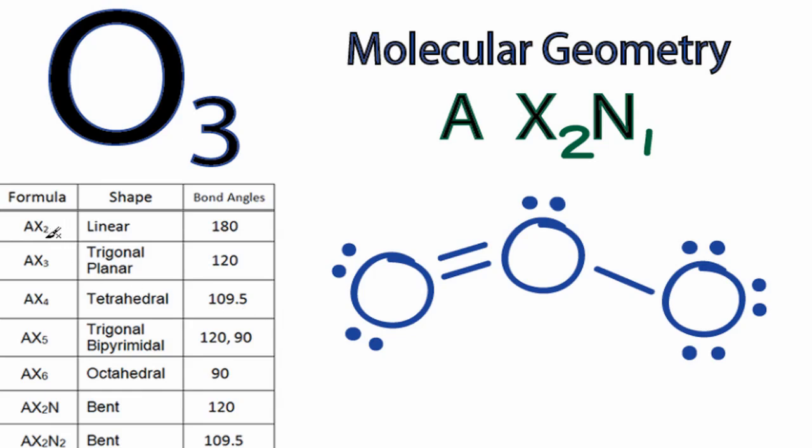As we go down, we have AX2, AX3, 4, 5. And here's an AX2N. So that's what we're looking at, right?